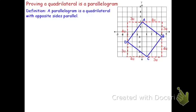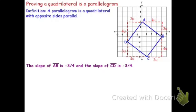Now I'm going to prove that the opposite sides are parallel. I need to show that AB and DC are parallel. The way I'm going to do that is look at their slopes — if their slopes are equal, the segments are parallel. We can do the same thing for segments AD and BC. If the slope of AB is negative 3 fourths and the slope of CD is negative 3 fourths, then I can conclude that AB is parallel to CD because their slopes are equal. That's one pair of parallel sides.